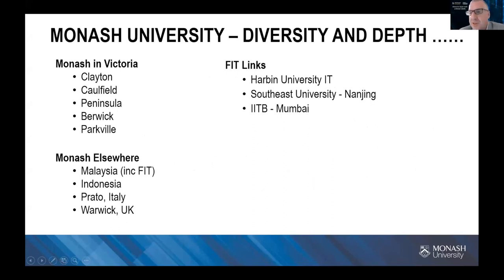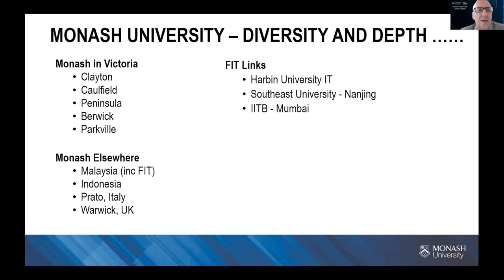A little bit about Monash University. For those not from Victoria, Monash is arguably the first or second university in Australia based on size, with around 80,000 students. We have campuses in Victoria — Clayton being the primary — but also a presence in many other countries. We are truly a global university, with a longstanding Malaysian campus, a new Indonesian campus, and some satellite facilities and partnerships.